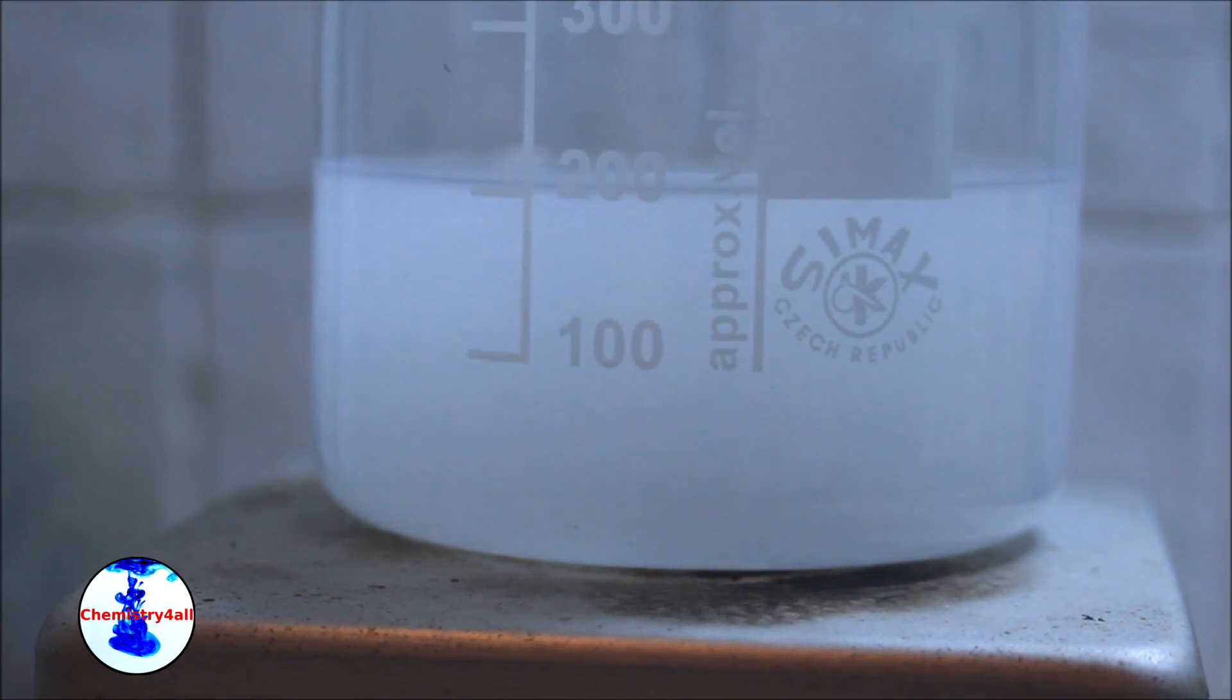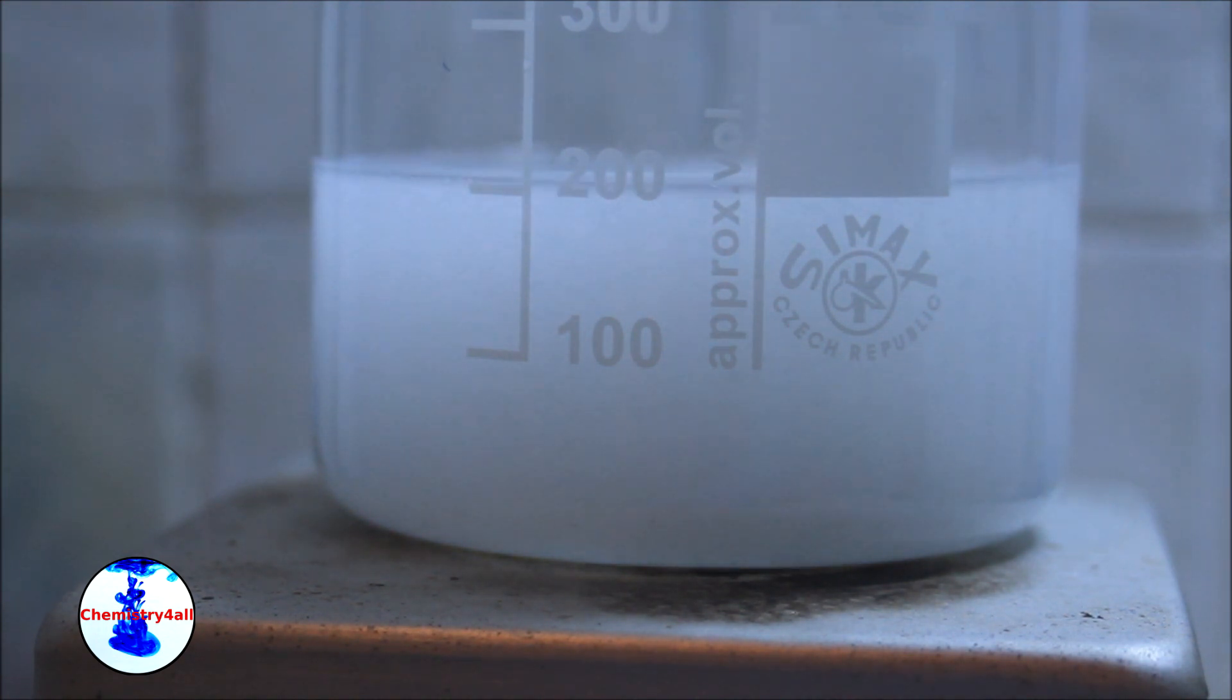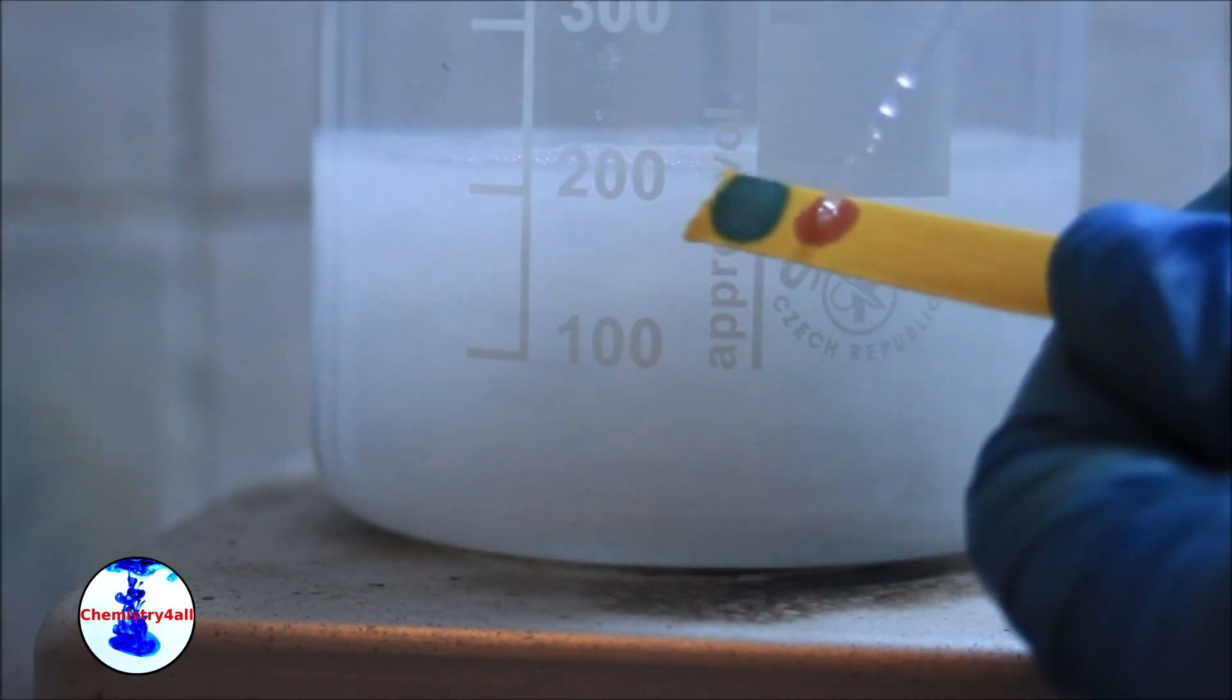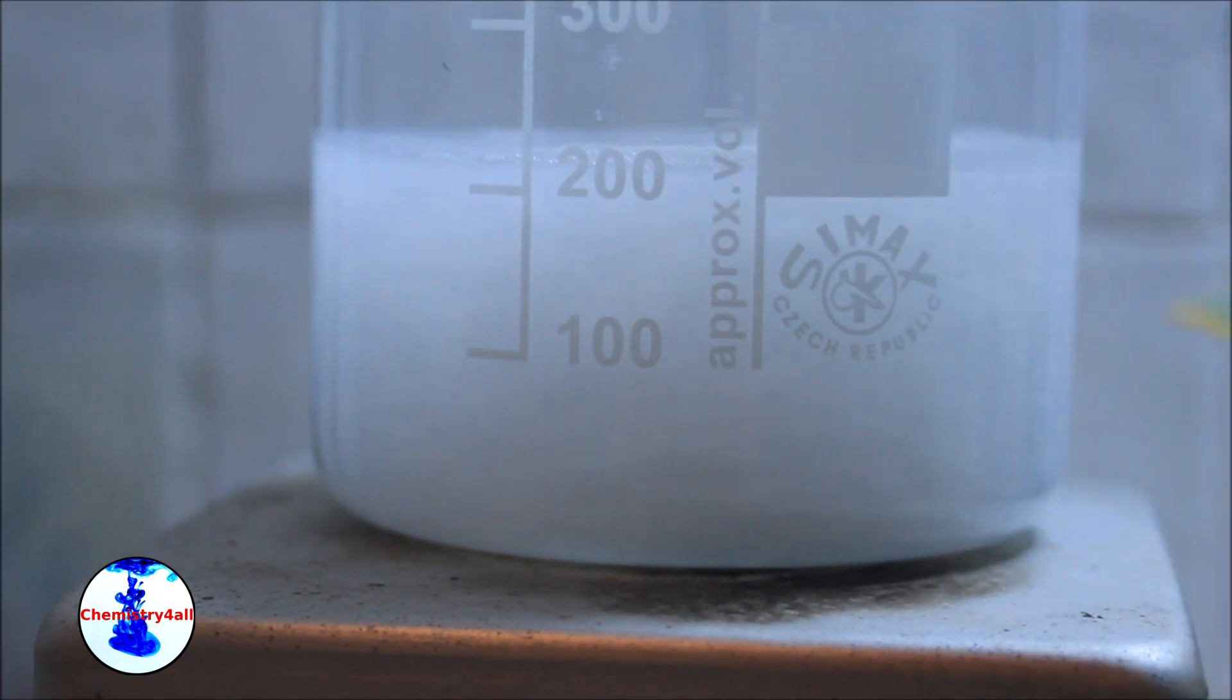This is done by adding small amounts of concentrated hydrochloric acid until we get an acidic pH. Ideally the final pH should be below 3 to ensure that all the product is in its insoluble form.